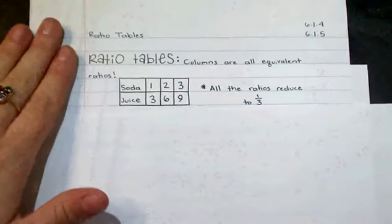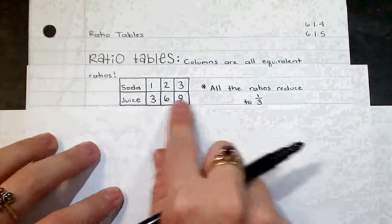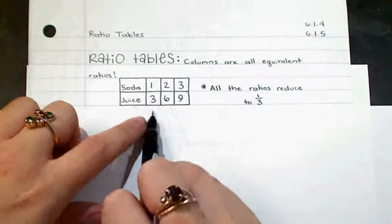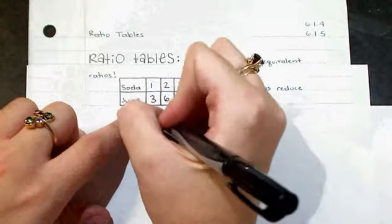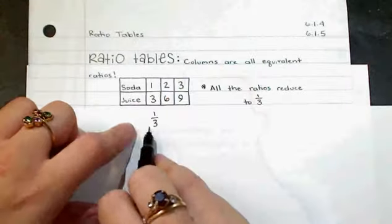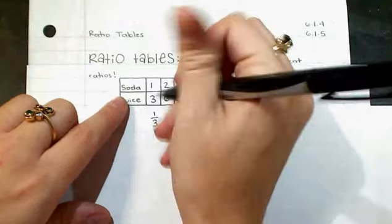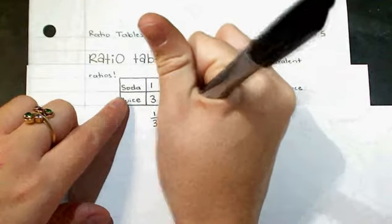So here, I can look at my table, and the table is actually just a different way of writing fractions. This would be the fraction one-third, and it's comparing one soda to three juices. It's also saying two-sixths,